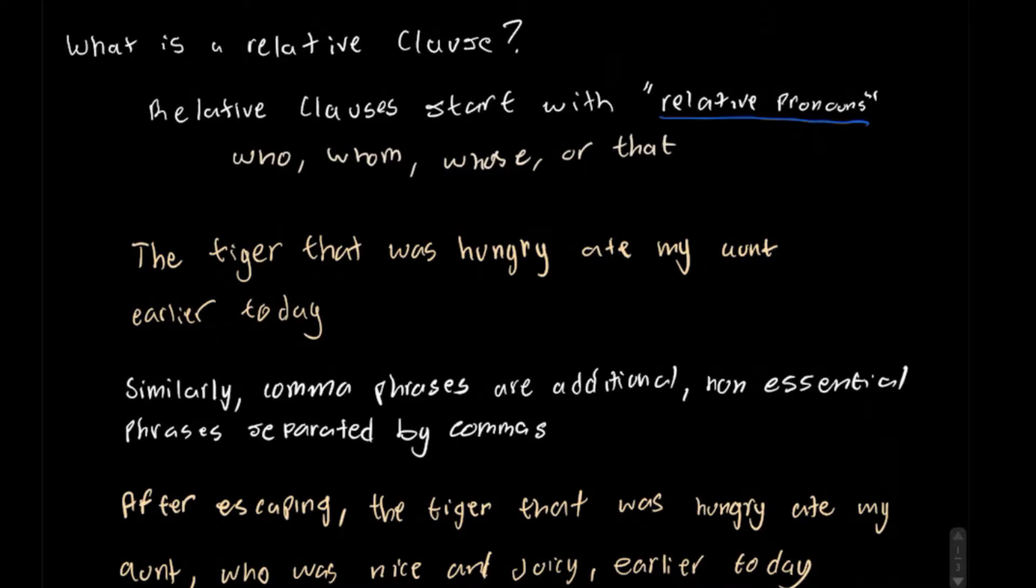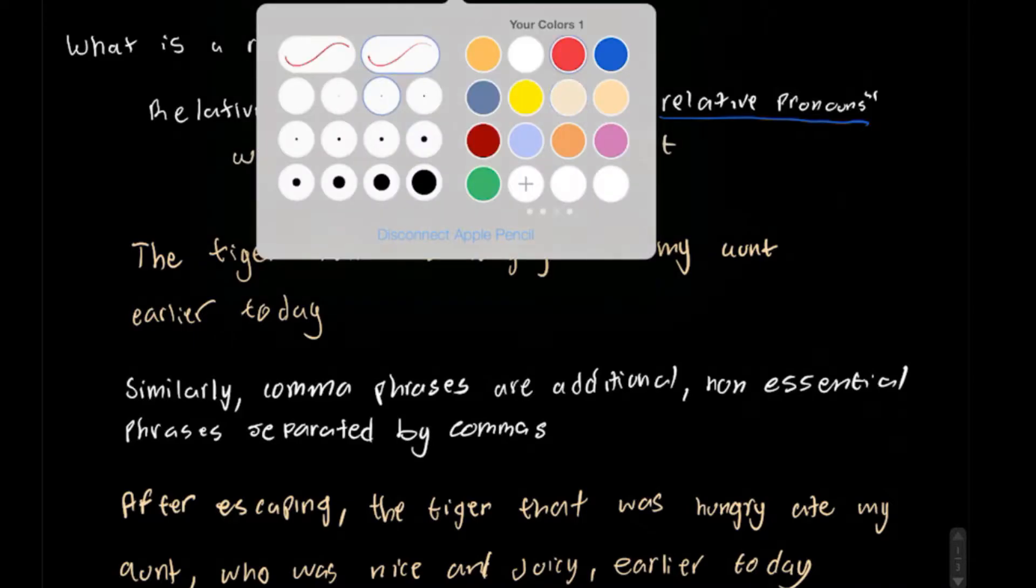The key point is that when phrases start with these words, it indicates that they're not directly needed to understand the primary meaning of the sentence. These are generally used to describe a noun or an animal or something like that. So, they're not directly needed to understand the main point or the core of the sentence.